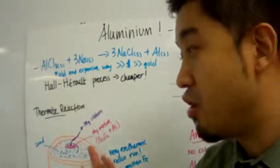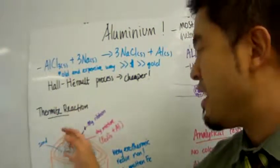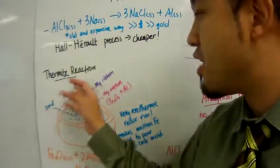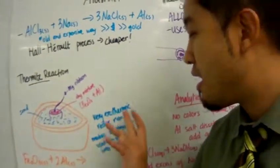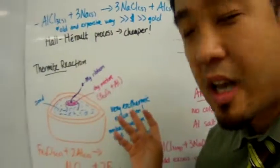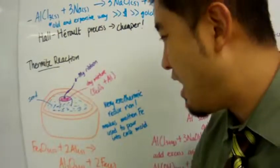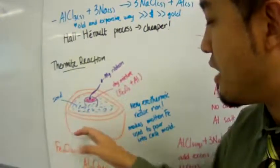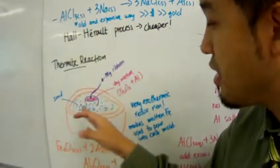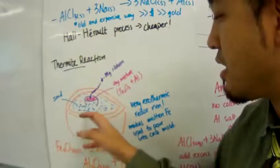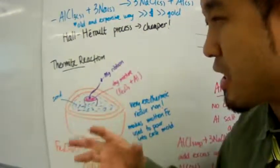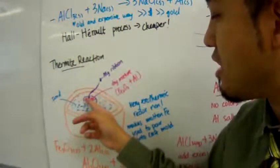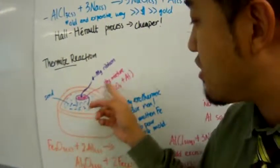Now another interesting reaction of aluminum is the thermite reaction. This is a very highly exothermic redox reaction that gives out a lot of energy. In a lab scale setup, you have sand in the container here to insulate the heat, and you have the dry mixture in this clay crucible right here.